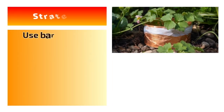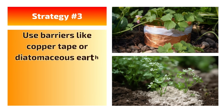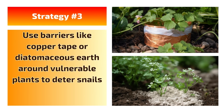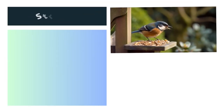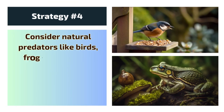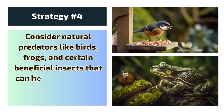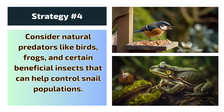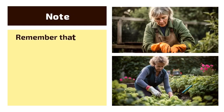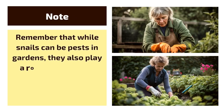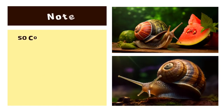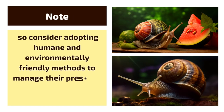Strategy 3: Use barriers like copper tape or diatomaceous earth around vulnerable plants to deter snails. Strategy 4: Consider natural predators like birds, frogs, and certain beneficial insects that can help control snail populations. Remember that while snails can be pests in gardens, they also play a role in ecosystem balance, so consider adopting humane and environmentally friendly methods to manage their presence if necessary.